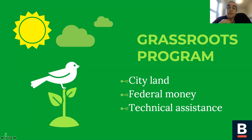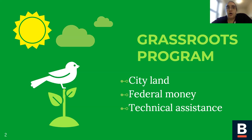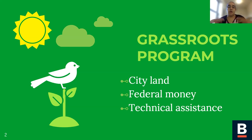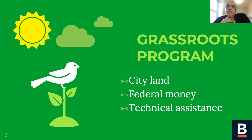The Grassroots Program is a program with the Department of Neighborhood Development at the City of Boston. The Department of Neighborhood Development is the City of Boston's affordable housing department. Land is taken into the city's inventory through tax foreclosure, or if it's surplus land from other city departments — for example, a parcel in the Boston Public Schools inventory that they don't need — they can transfer it to us. We then distribute that land to organizations and neighborhood groups in the community to turn into open space, affordable housing, or other kinds of projects. The land that is often turned into community gardens in Boston comes from the Department of Neighborhood Development.